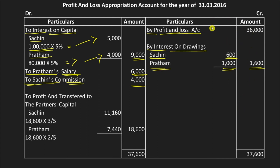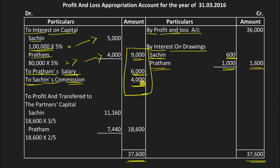Now we total everything up. On the credit side: 36,000 plus 1,600 = 37,600 rupees. On the debit side: interest on capital 9,000 + salary 6,000 + commission 4,000 = 19,000. Subtract 19,000 from 37,600 and you get 18,600 rupees as the net distributable profit.